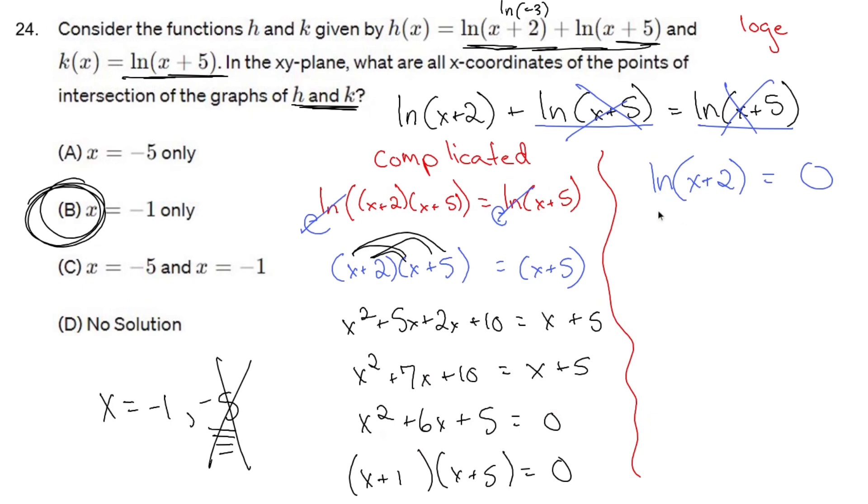So you take e to the of both sides. That makes that ln go away, leaving you with x plus 2. Anything to the zeroth is 1. Subtract 2 from both sides. 1 minus 2 is negative 1, just like we got right here. And you don't have to worry about the negative 5 ruining everything.